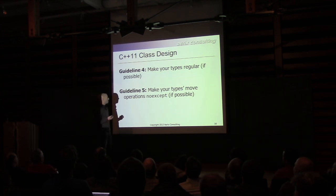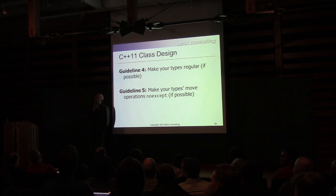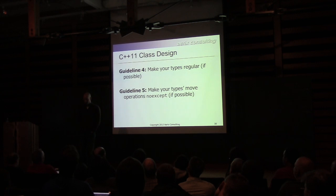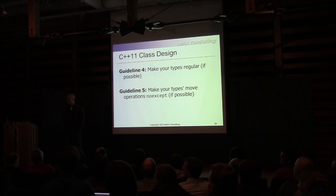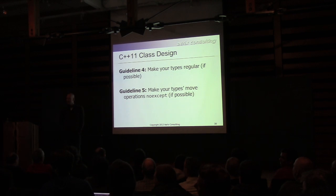Guidelines: make your types regular if at all possible, and make your move operations noexcept if possible. Chandler asks: what state of confusion could lead you to design a class where move operations can't be noexcept? The speaker points to std::pair — it doesn't know whether its element types have noexcept move. Someone mentions std::list is annoyingly hard to implement with a noexcept move due to standard guarantees. The speaker adds that std::vector doesn't have noexcept move constructor in the standard, which makes him very mad. There's discussion of a forthcoming paper on containers and noexcept swaps.